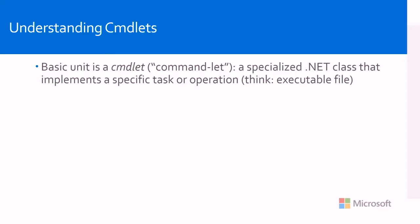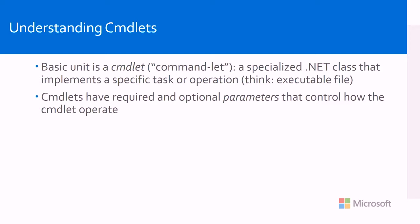Basically, it's a basic unit of operation that allows you to get a task done. The textbook definition is a specialized .NET class that implements a specific task or operation — think of it like an executable file. It does have required parameters that must be provided or you get an error message. Additionally, it has optional parameters that you can add on to it, which allows you to get more control and more results back from what you're trying to get.